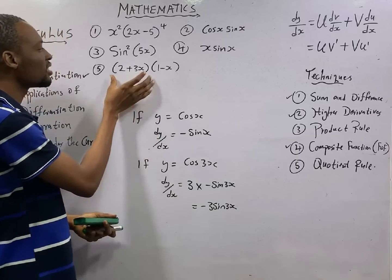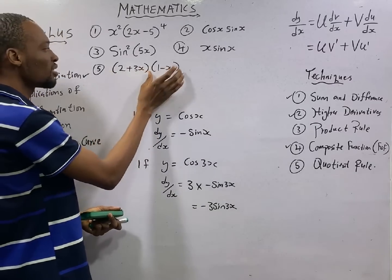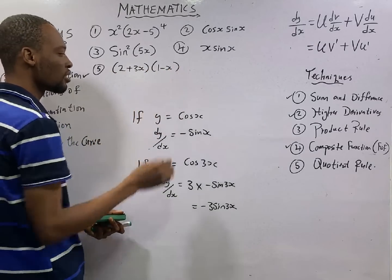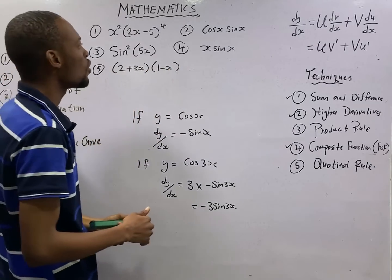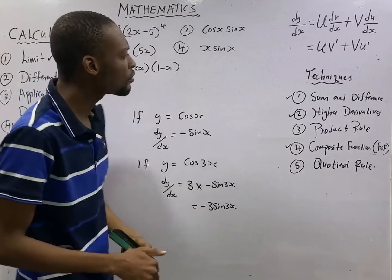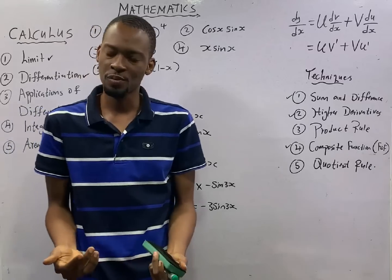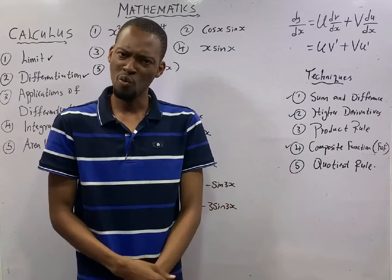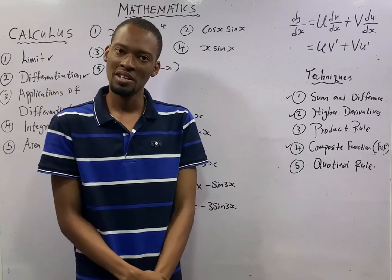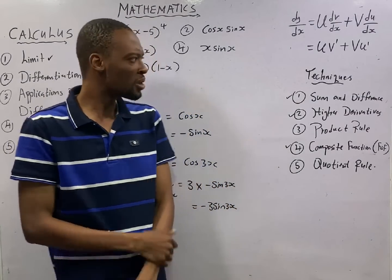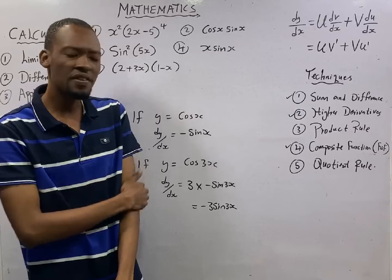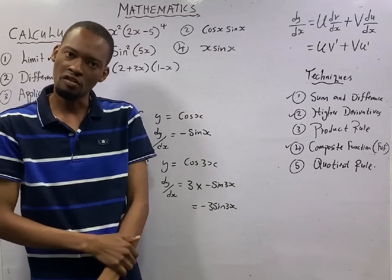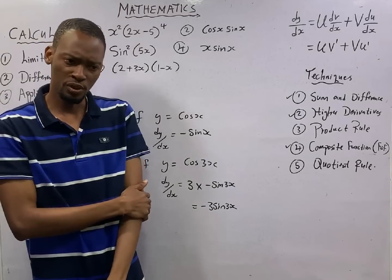This guy — this is this one and this. So when you are given products to differentiate, what do you do? How do you go about the derivative of products?